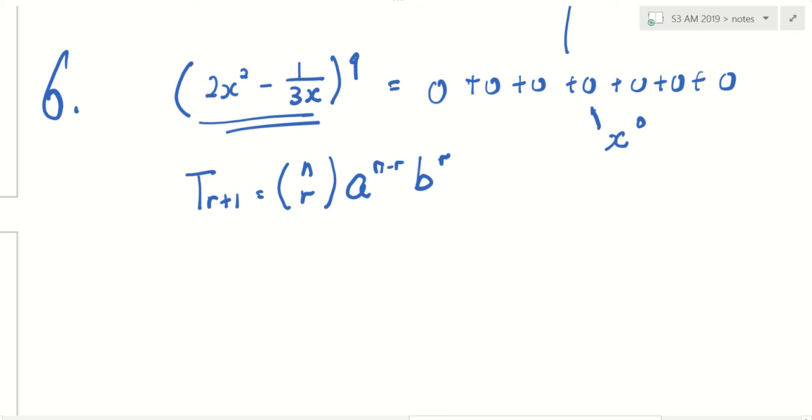Yeah, you have to find which term is it. So the idea here is, you want to find r equals to what? That will give you the independent term. Because right now, I don't know, is it term number 1, term number 2, term number 3, which one exactly will give you? I don't know. I could expand everything, but I don't want to. So that's why I use this method.